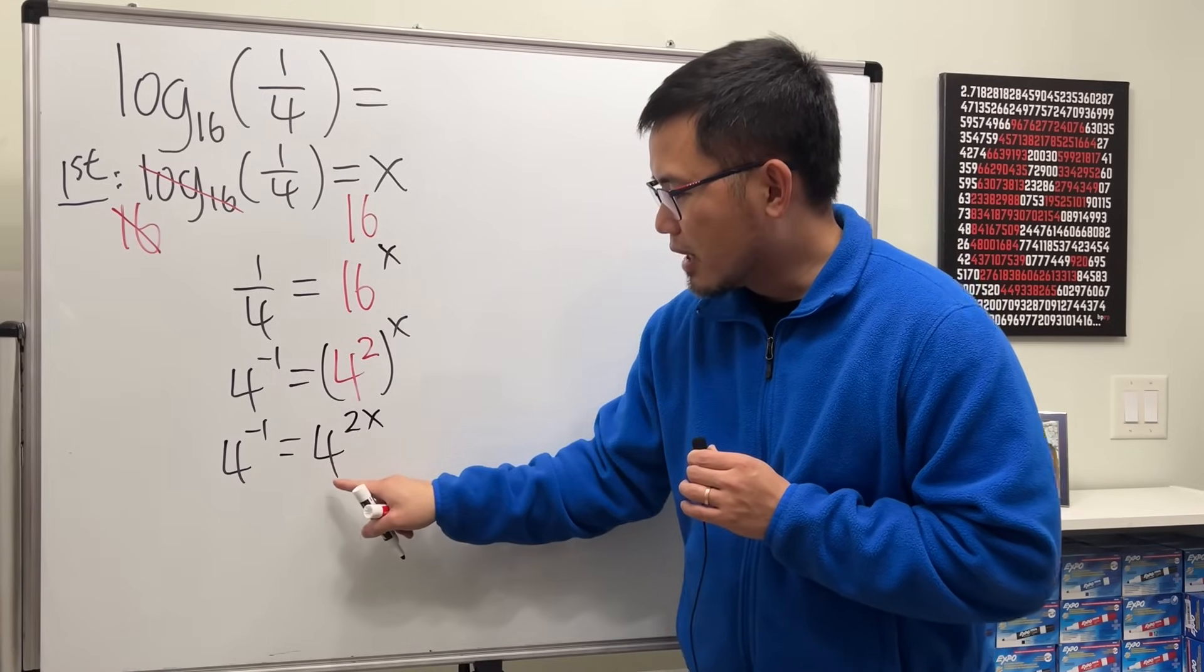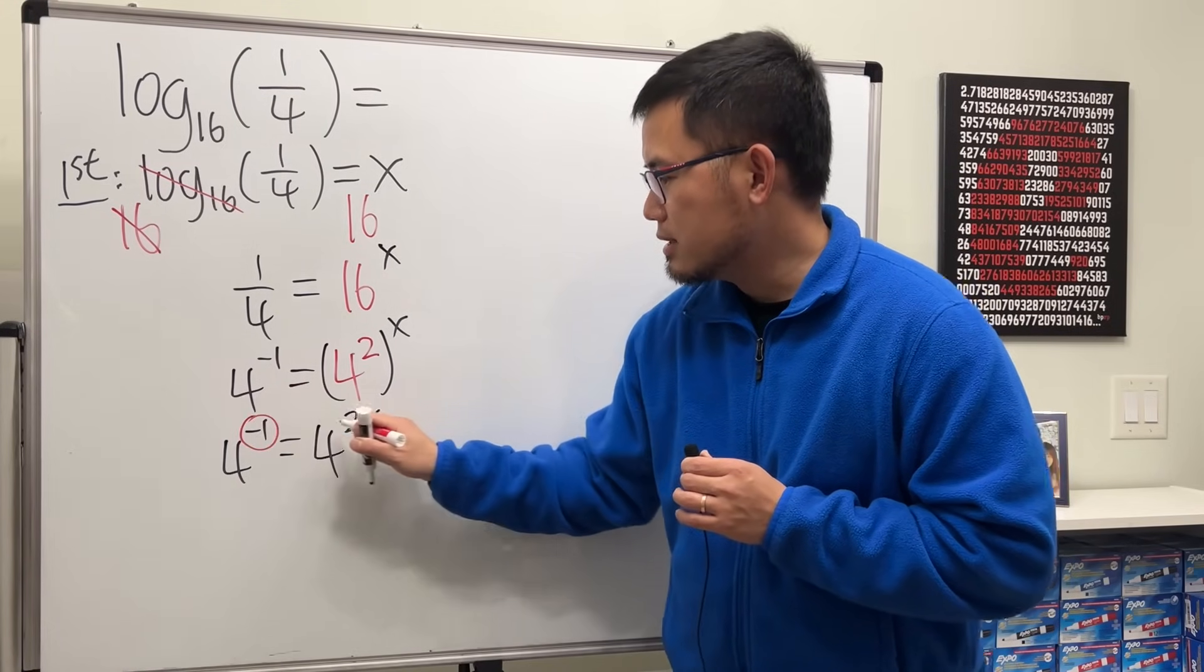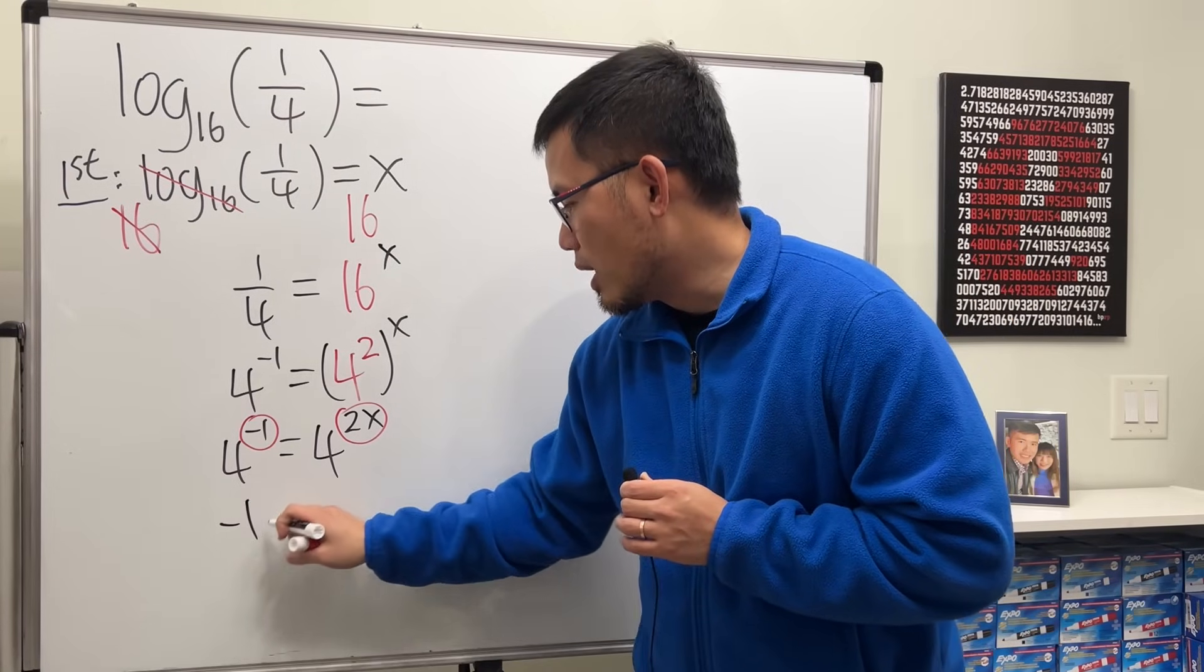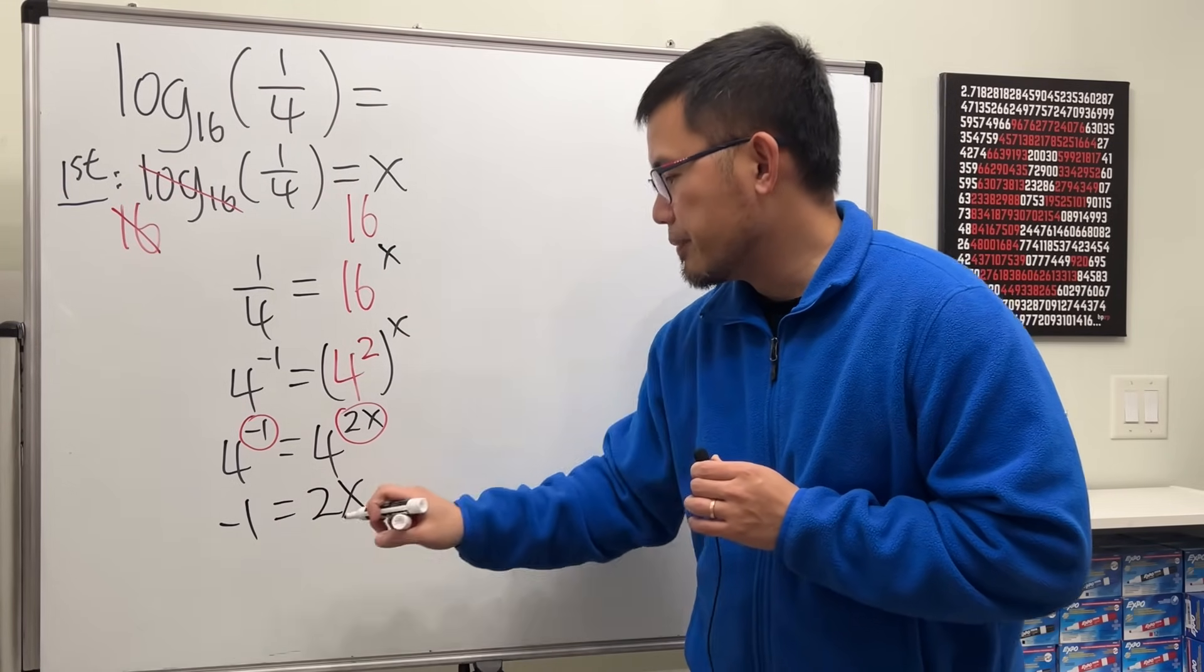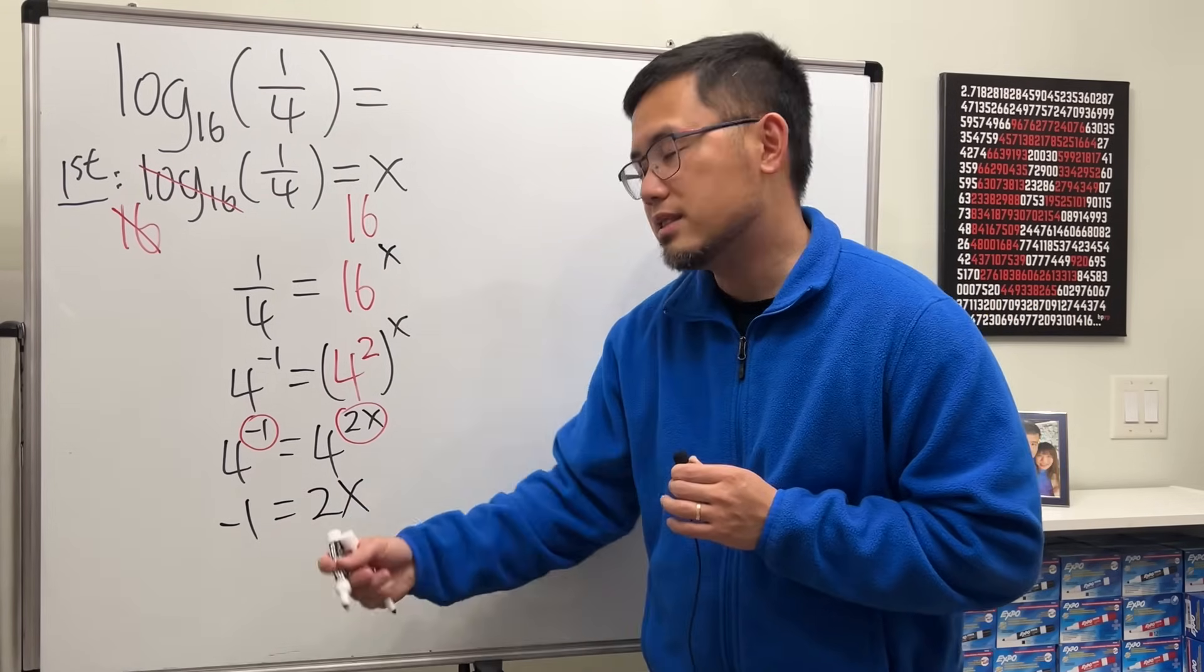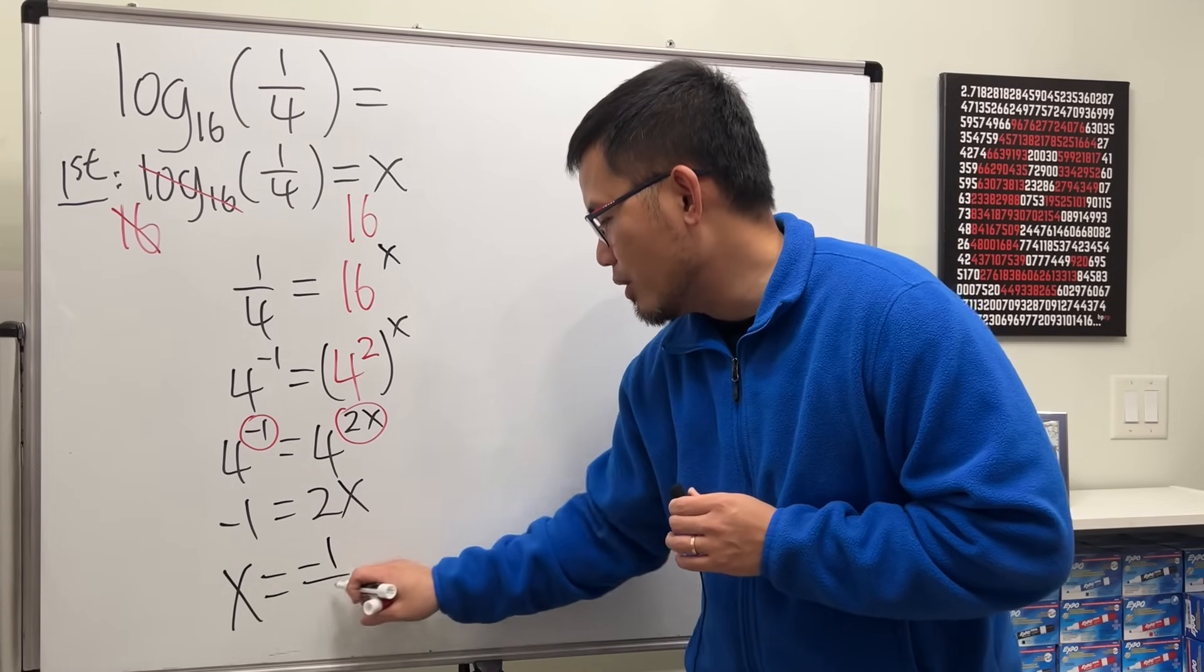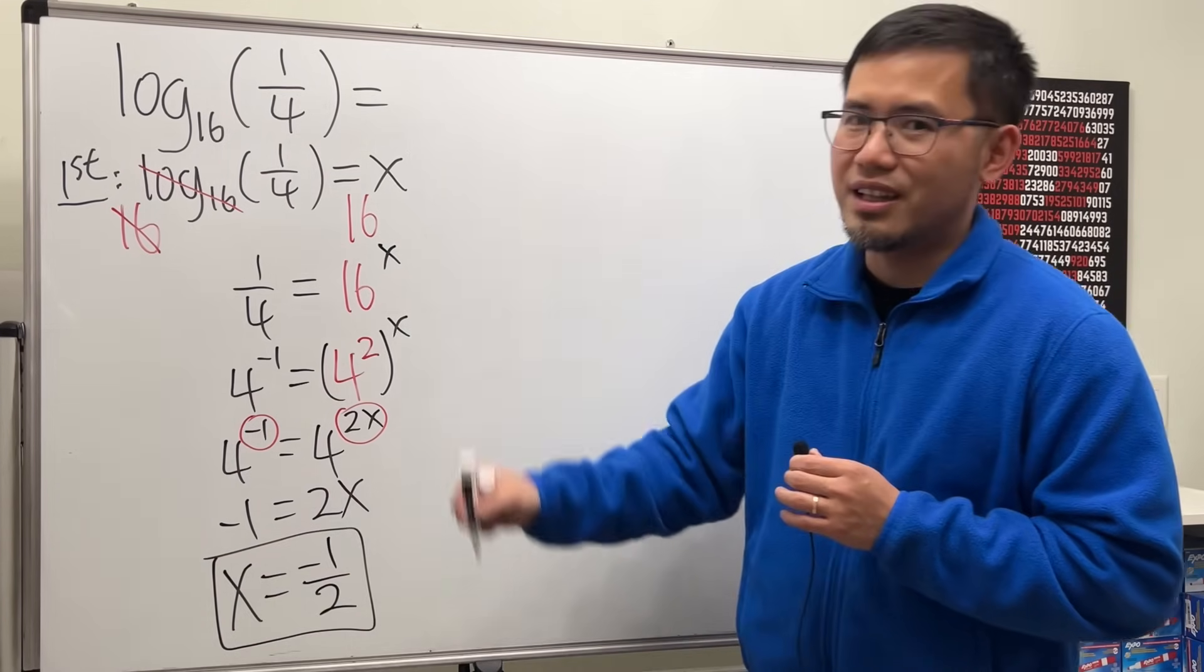When the bases are the same, the exponents must equal. Therefore we see we have negative 1 equals 2x. Divide 2 on both sides. Ladies and gentlemen, x equals negative 1 over 2, and we are done.